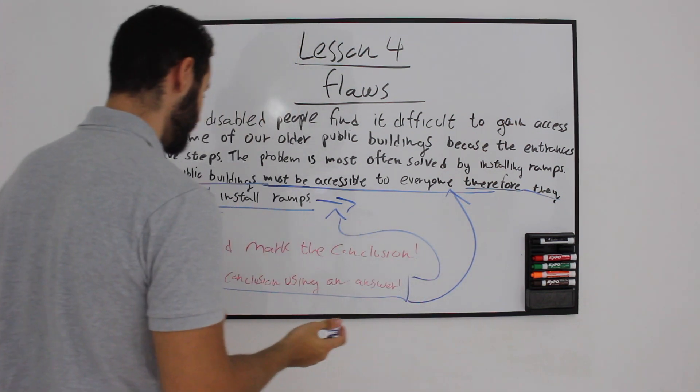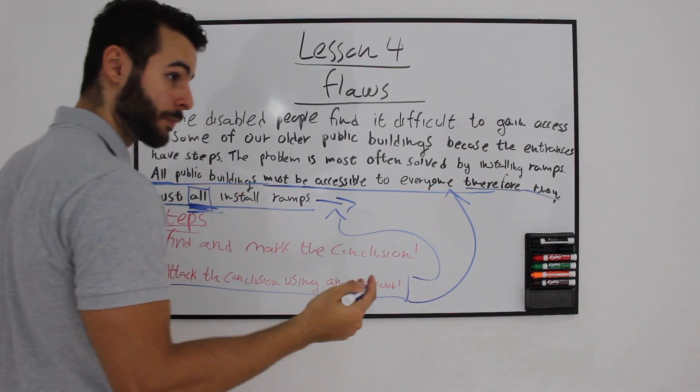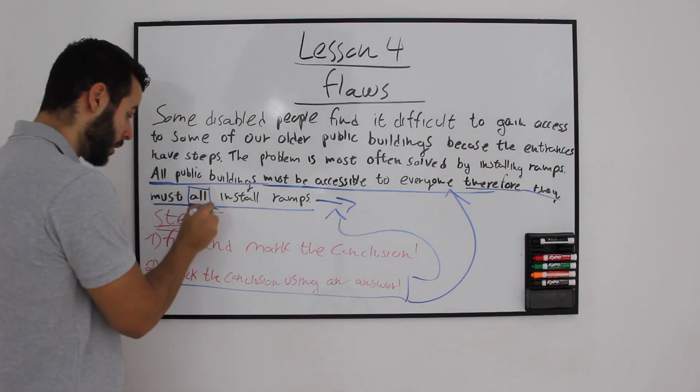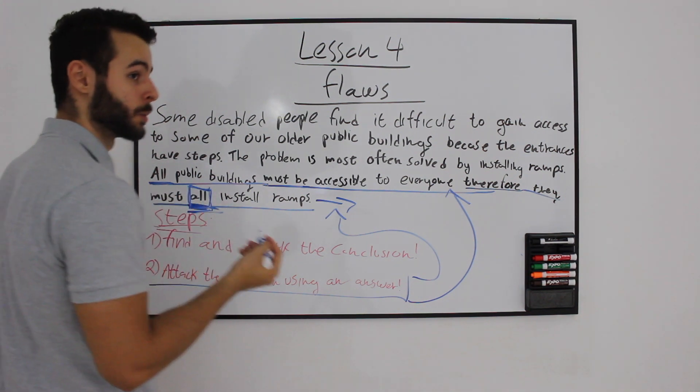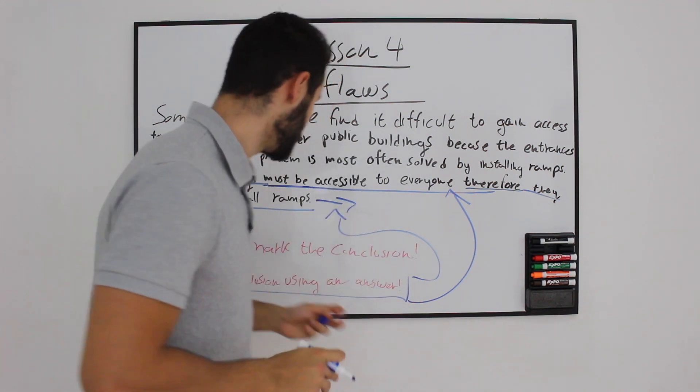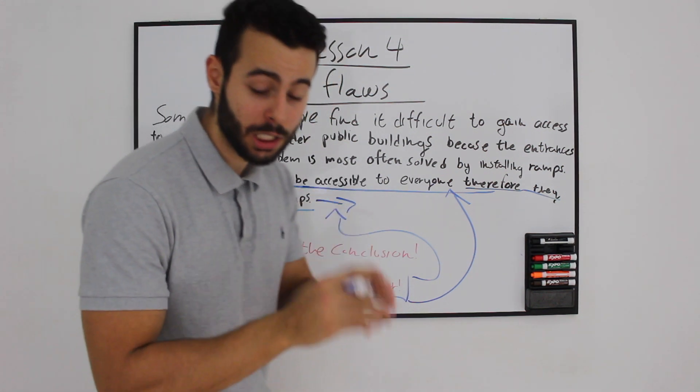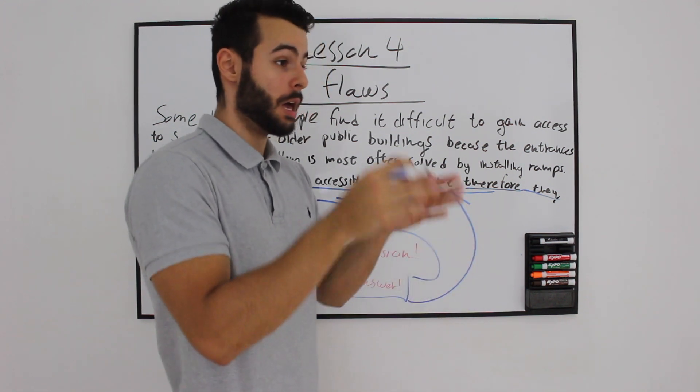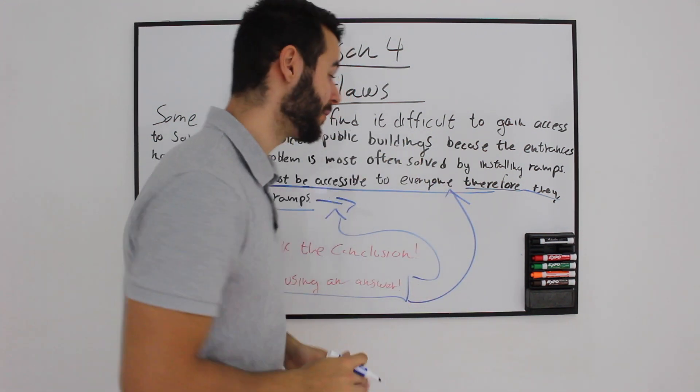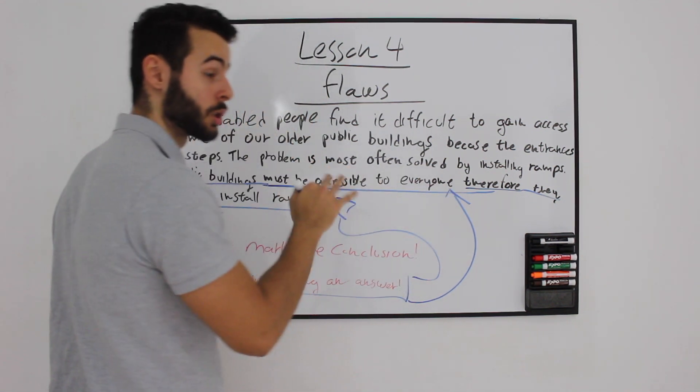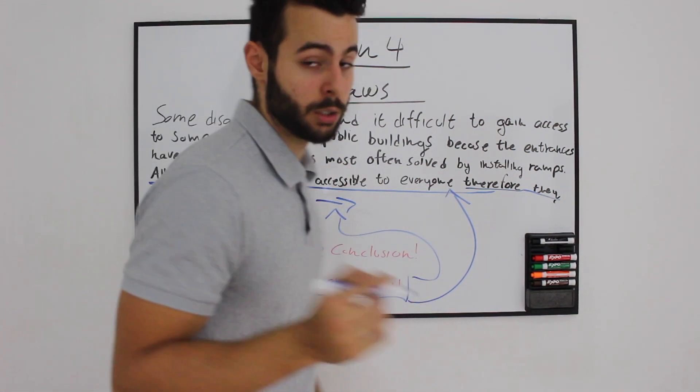So some of them shouldn't get ramps. Not all of the buildings, public buildings, should get ramps. And this is the way to actually use those two steps and to actually use the answer and to attack the following paragraph's conclusion. You have to attack it and see if it weakens the actual conclusion. And if it does, you have your answer.